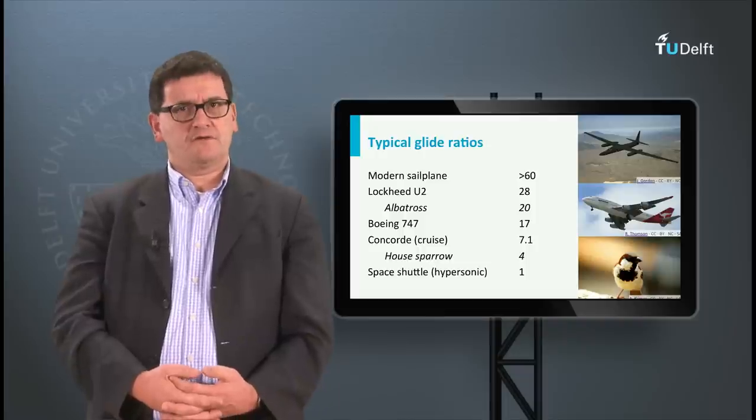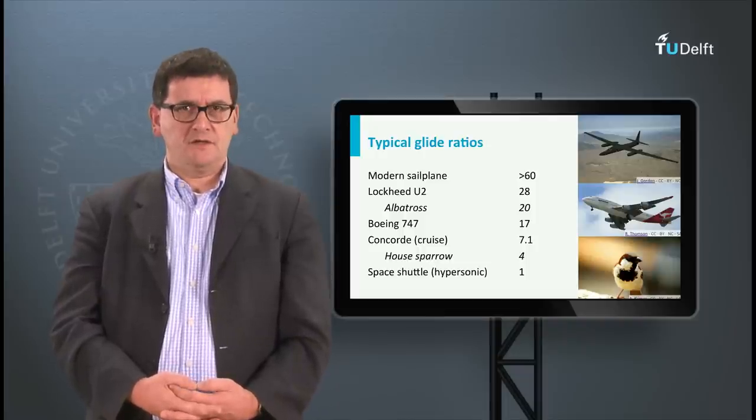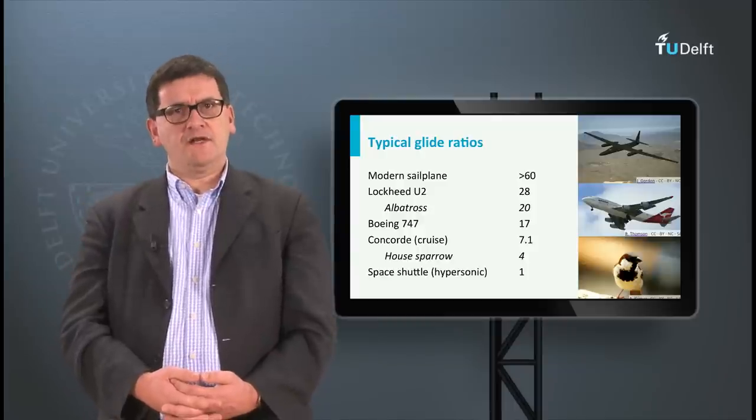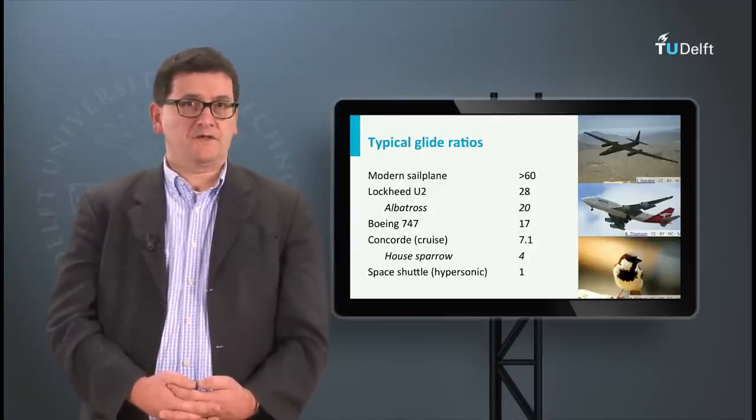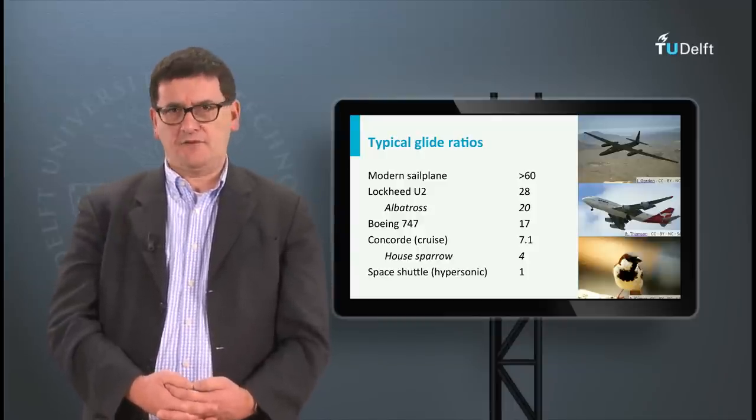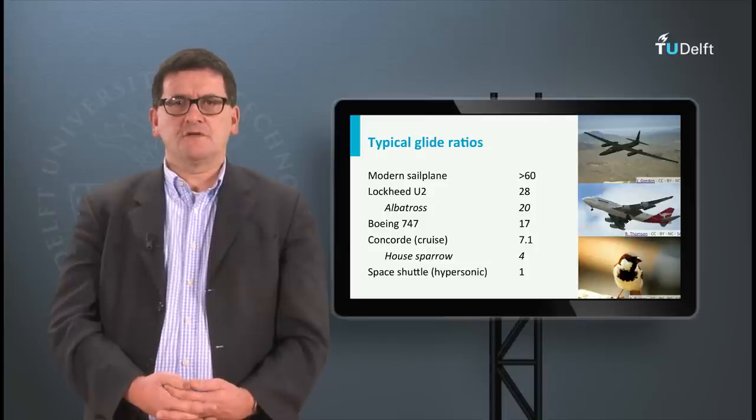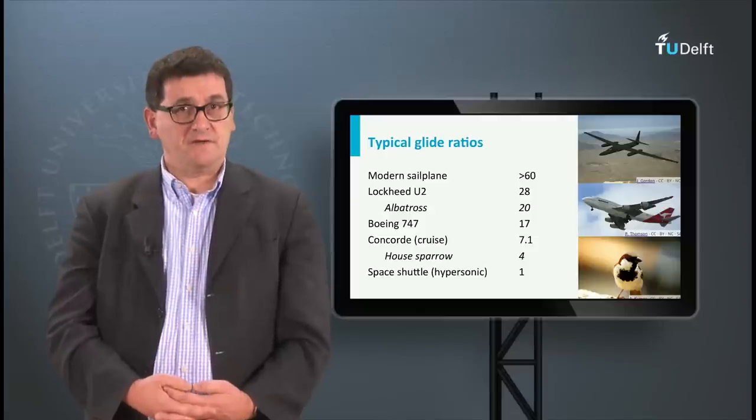To give you an idea about the glide ratios of some aircraft and some birds, look at this list. Sailplanes and aircraft with slender wings like the U-2 reconnaissance aircraft have very high glide ratios. Also the glide ratio for a Boeing 747 is still high.